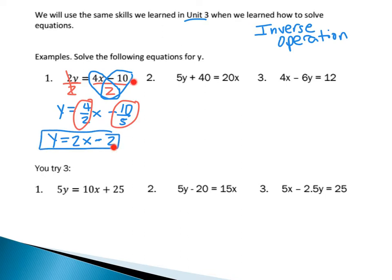So this equation simplifies to y equals 2x minus 2. Although what we started with and what we ended with look a lot different, they mean the same thing. What I did in example 1 is exactly what you're going to be doing in this section — solving for y.